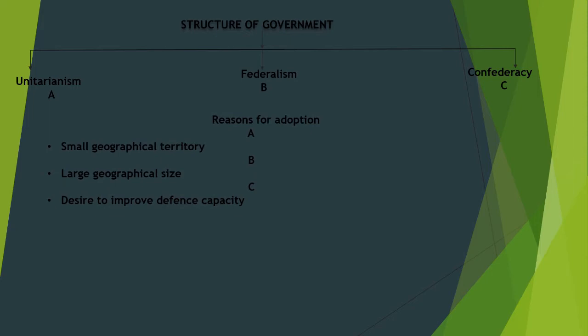Now because Nigeria operates the federal system, let's talk more about the federal system. In the federal system, there are three lists of powers. The first list is the exclusive list of powers — powers reserved for the federal government or the central level. This includes defense of the country, maintenance of external relations, currency, and a whole lot more.